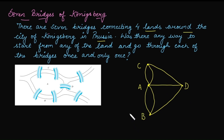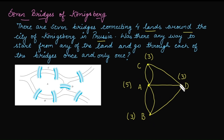Let's find the degree of each vertex: degree of B is 3, degree of A is 5, degree of C is 3, and degree of D is 3. The degree of each vertex is odd, and for an Euler path we need exactly two vertices of odd degree. Since more than two vertices have odd degree, there does not exist an Euler path — meaning we cannot cross each and every bridge exactly once.